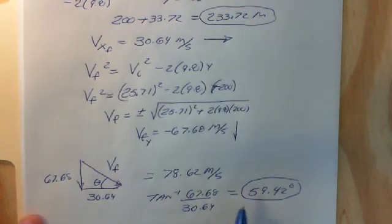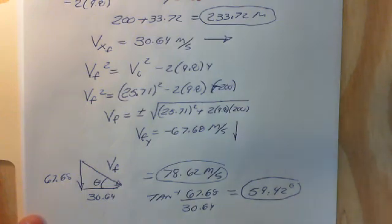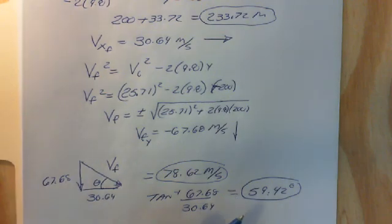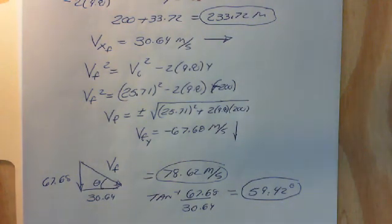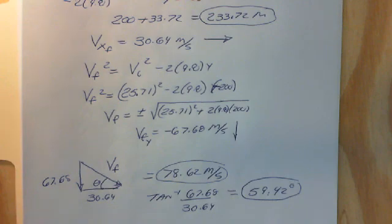So we found a lot of information here: the final velocity at impact, the angle at impact, the horizontal displacement, and the maximum height of the object. Work through these problems very methodically. Work them separately — work with the y direction by itself and the x direction by itself. You're always going to find time by looking in the y direction only. Make it just like a free fall problem. It's the same as if you just threw an object up with a known initial vertical velocity and wanted to find how long it takes to come back down.